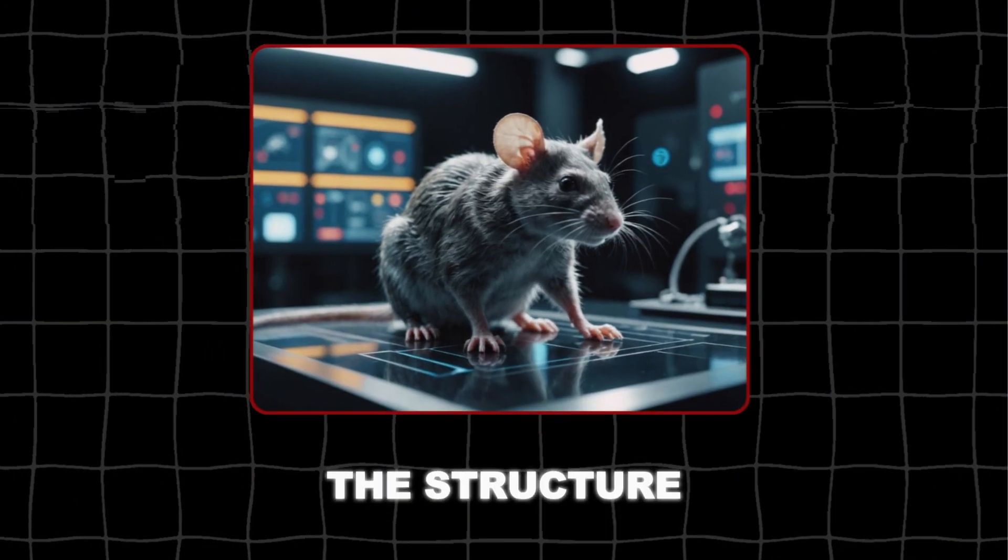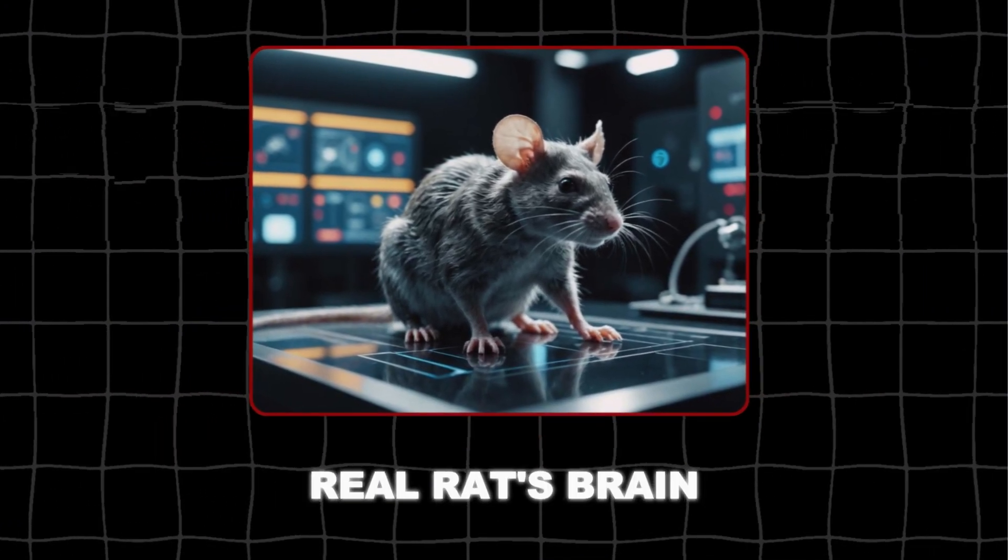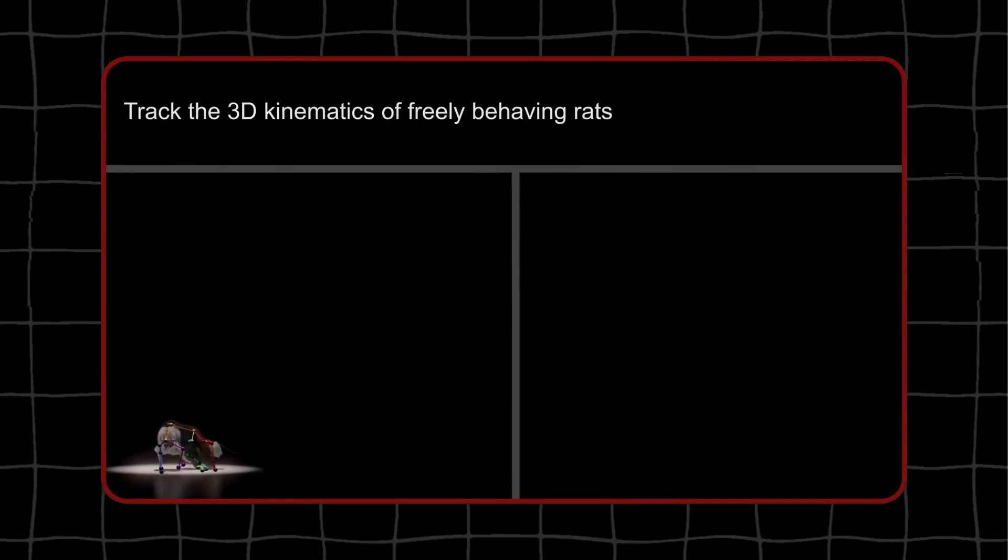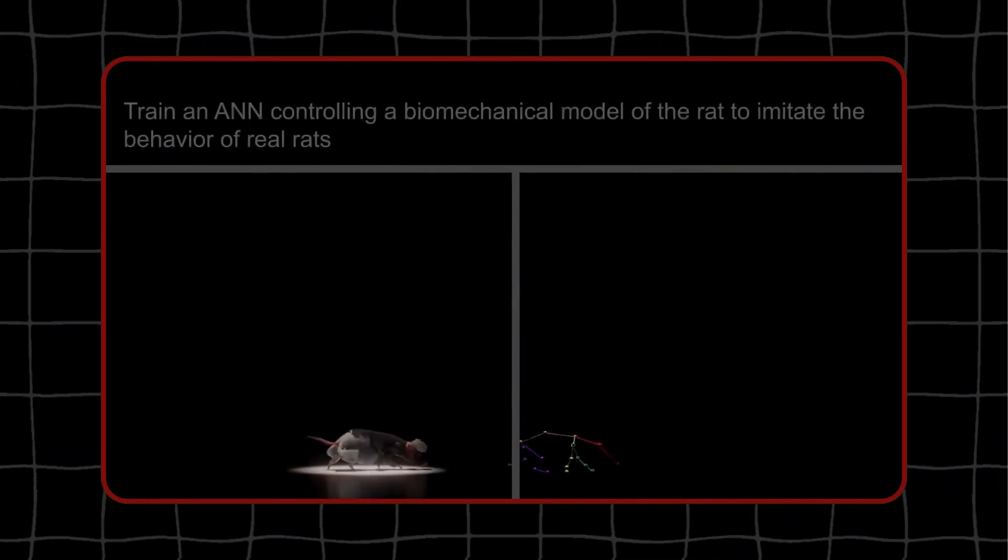The artificial brain replicates the structure and function of a real rat's brain. In the simulation, the virtual rat can explore its environment, respond to stimuli, and perform tasks that require coordination and decision-making.